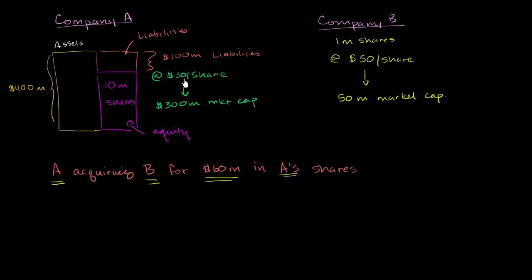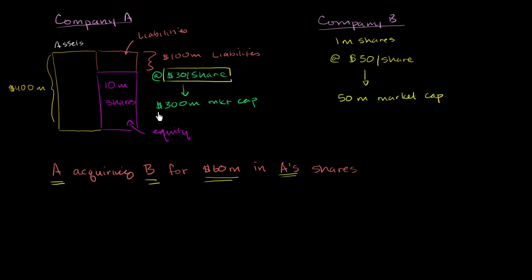Right now, they're trading at $30 a share. So in order to make this transaction happen in A's shares, A says: I need to create the equivalent of $60 million in shares. If each of my shares right now on the market are worth $30 a share, then I can do that by creating or issuing 2 million shares.